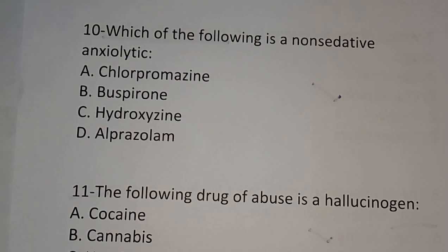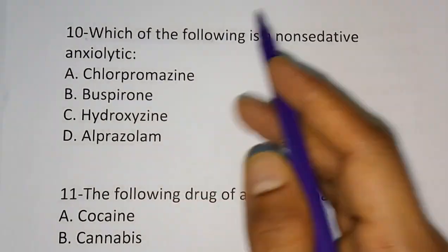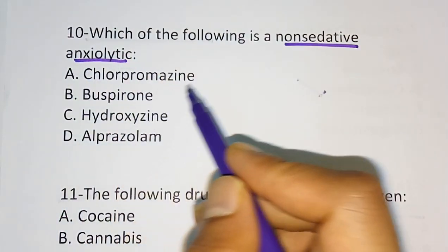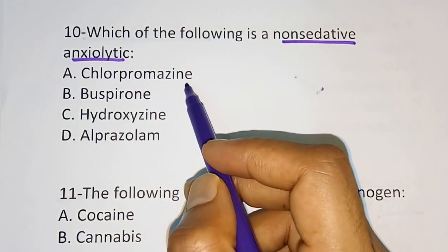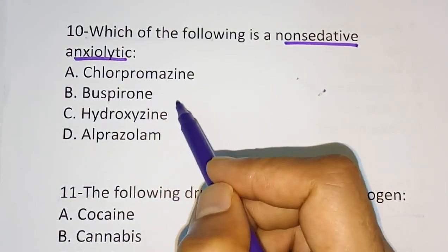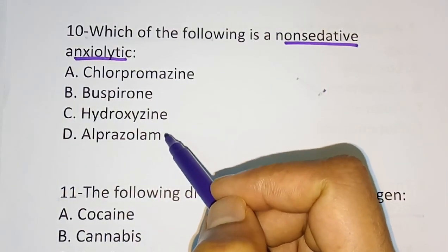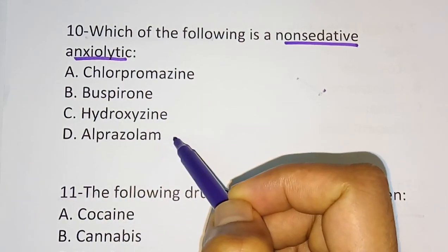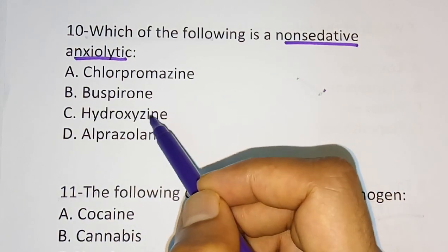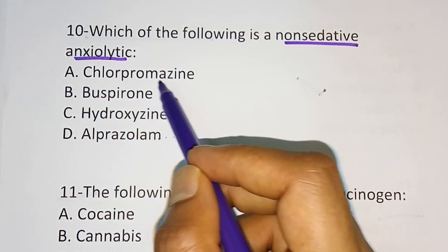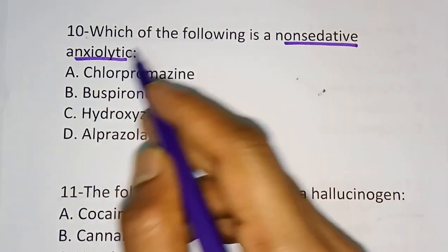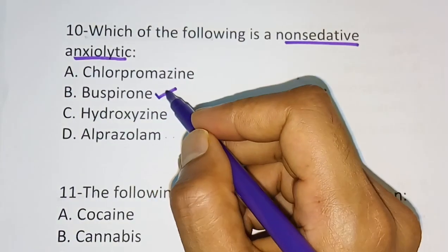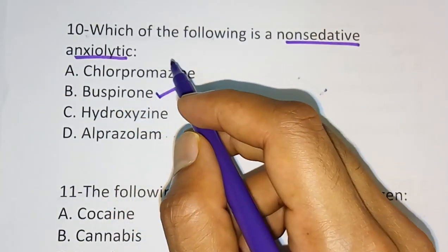Question 10: Which of the following is a non-sedative anxiolytic (anti-anxiety drug)? Options are: chlorpromazine, buspirone, hydroxyzine, alprazolam. The correct answer is buspirone. It is coming under the azapirone category of anxiolytic classification.